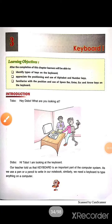Chapter 3: Keyboard. We know about the important parts of a computer, i.e., monitor, CPU, mouse, and keyboard. In this chapter, we'll learn about the keyboard.